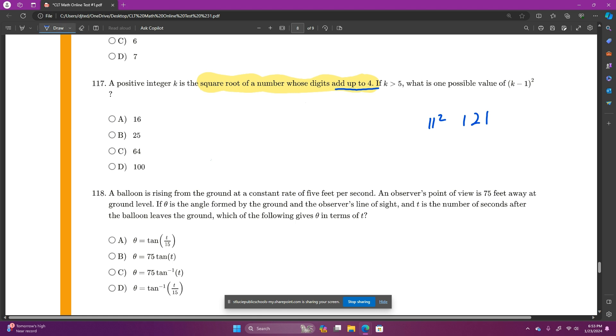So we want k is the square root of a number whose digits add up to 4. So that means that k would be our 11 here. So if we put that in, 11 minus 1 squared is just 10 squared. So that's 100.